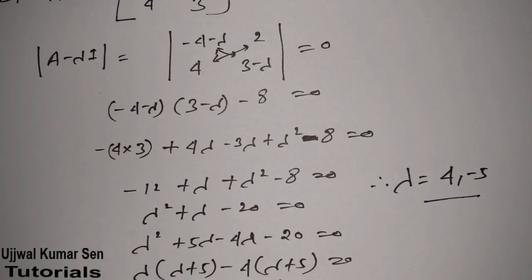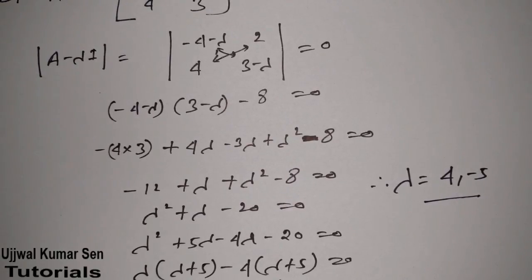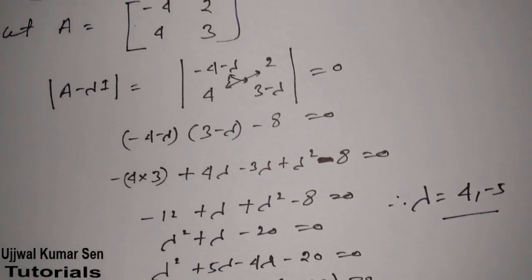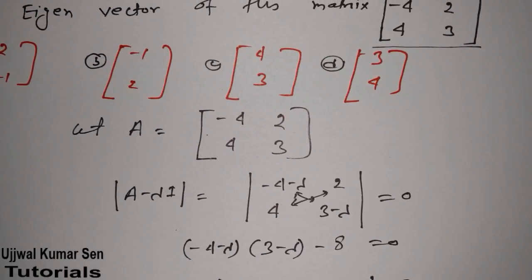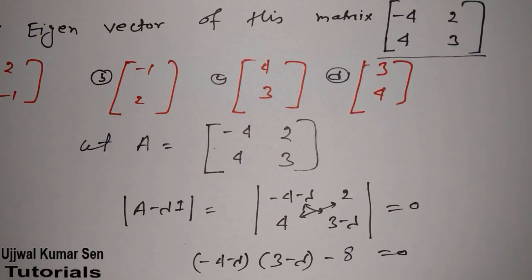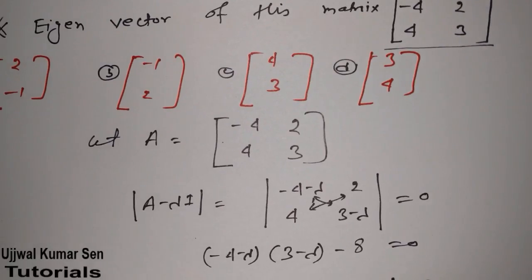So the eigenvalues we are getting here are 4 and minus 5. Within about 2 minutes we have found the eigenvalues of the given matrix. Now I am going to share with you how to find out the eigenvectors.